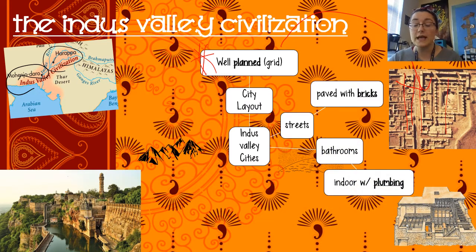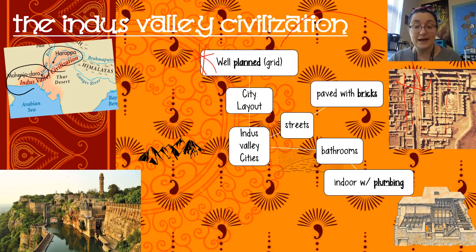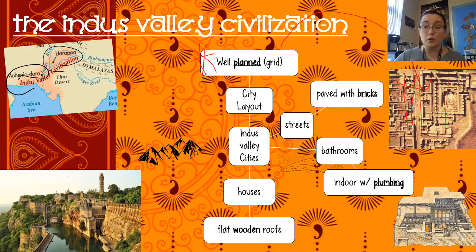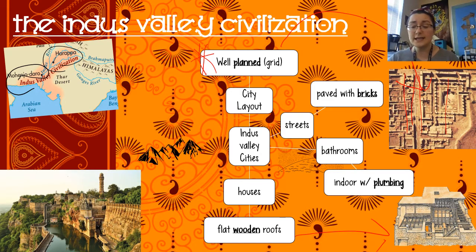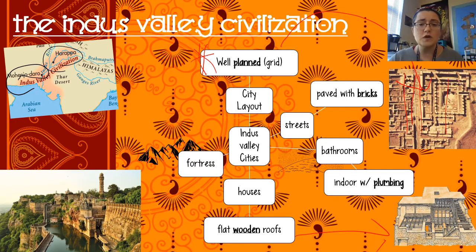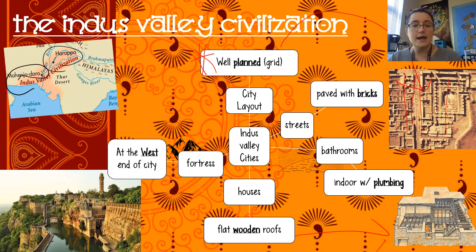They had indoor bathrooms — indoor plumbing thousands of years before the rest of Europe. So we had a whole system to take the water out from the houses. And those houses had flat wooden roofs, kind of like what we saw in Egypt — to catch those nice breezes, and people spent a lot of time outside. On one end of the city was the fortress at the west end of the city.